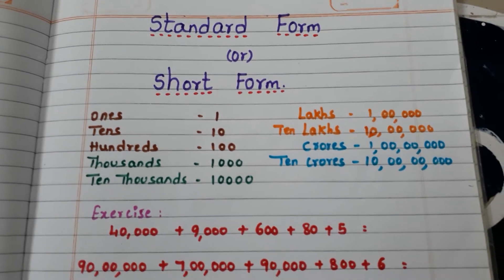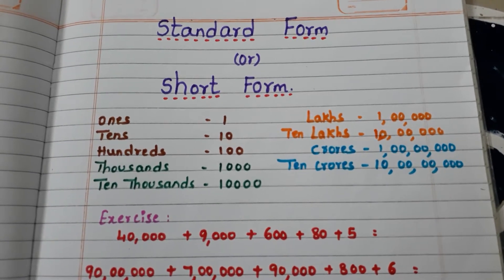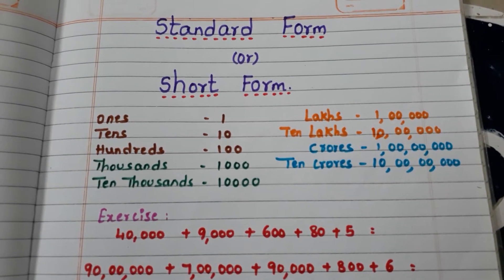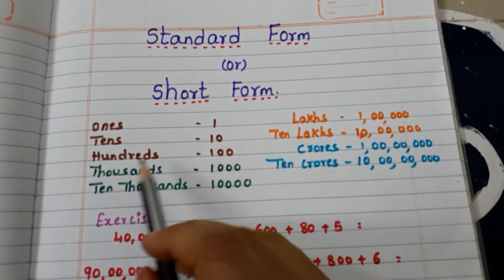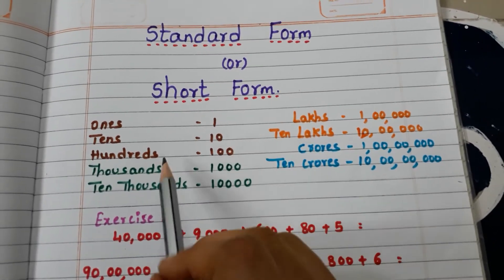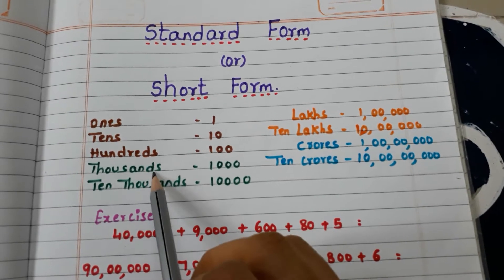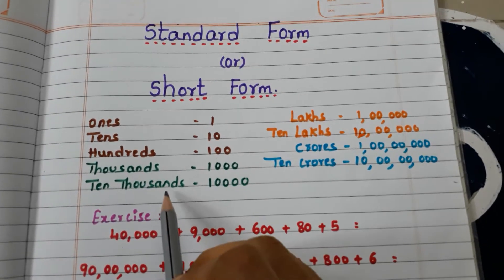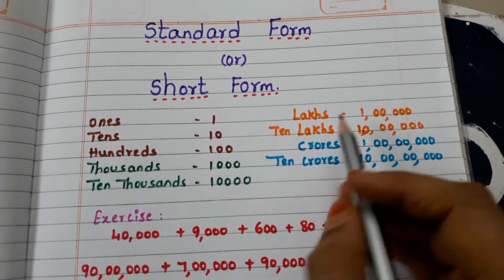Before going to write the short form, let us observe places and their corresponding zeros. For ones, no zero is there. For tens, one zero. For hundreds, two zeros. For thousands, three zeros. For ten thousands, four zeros.